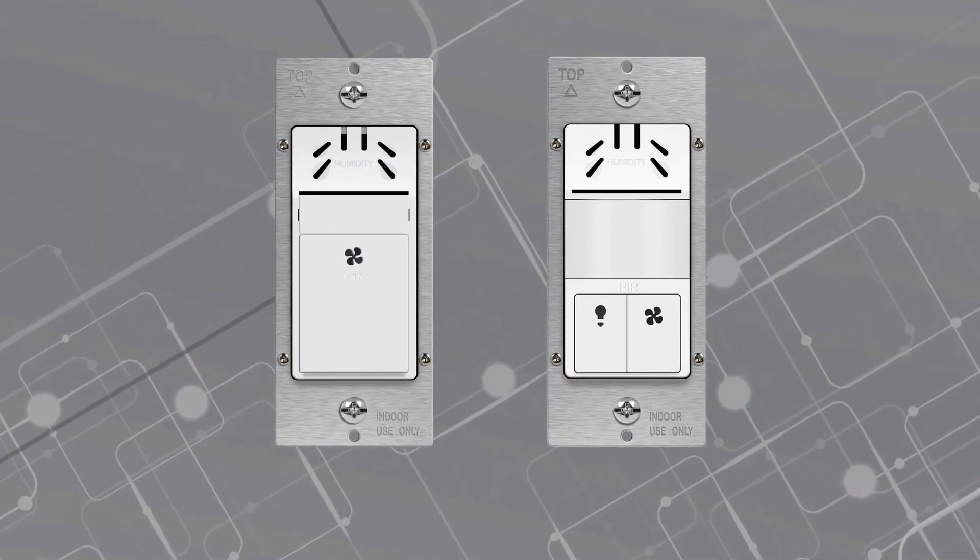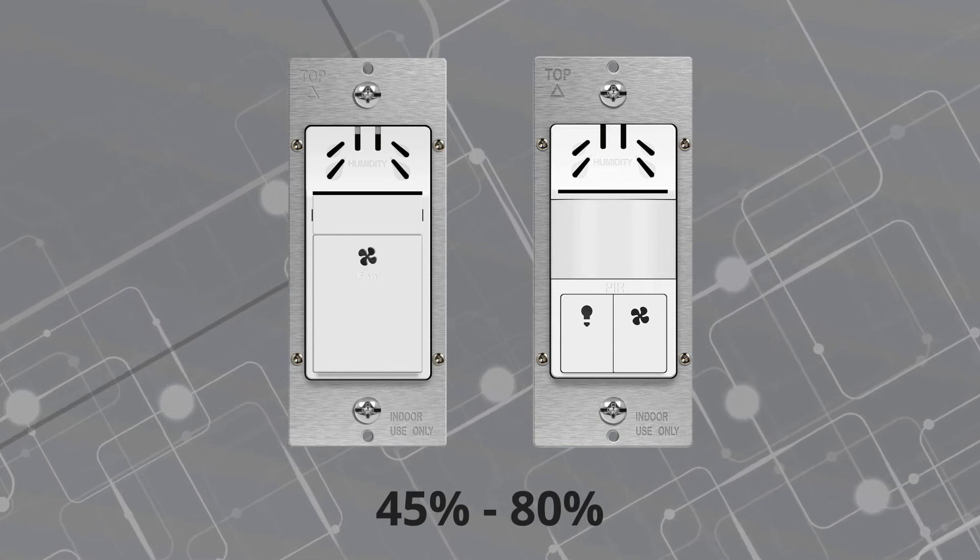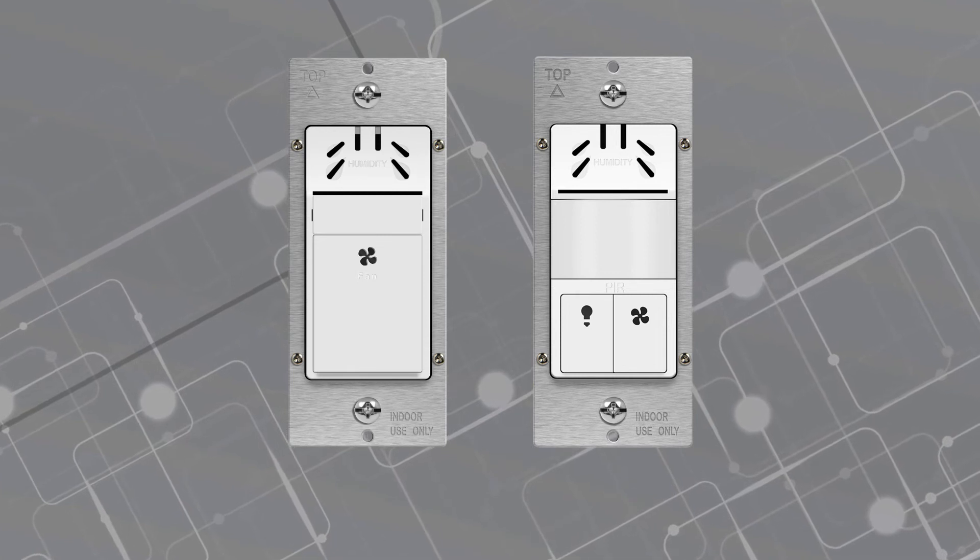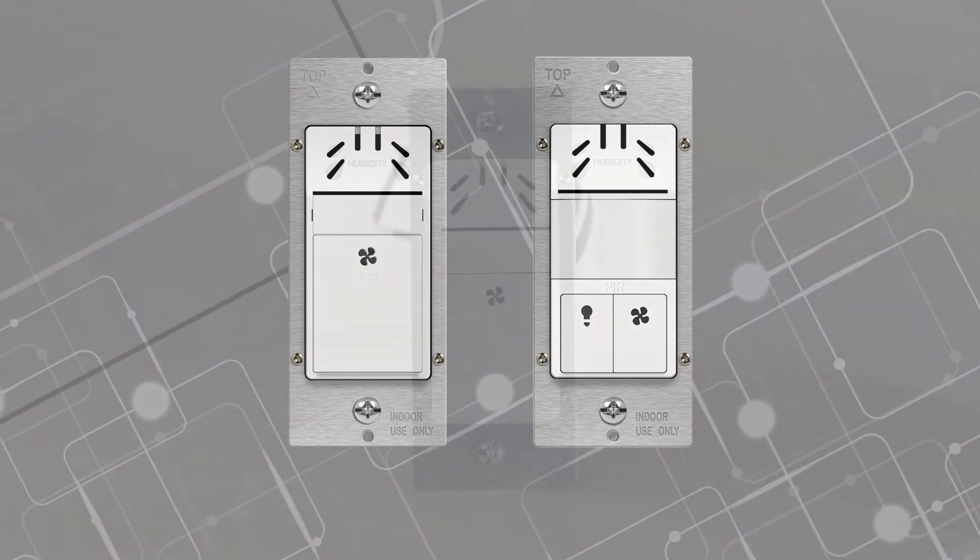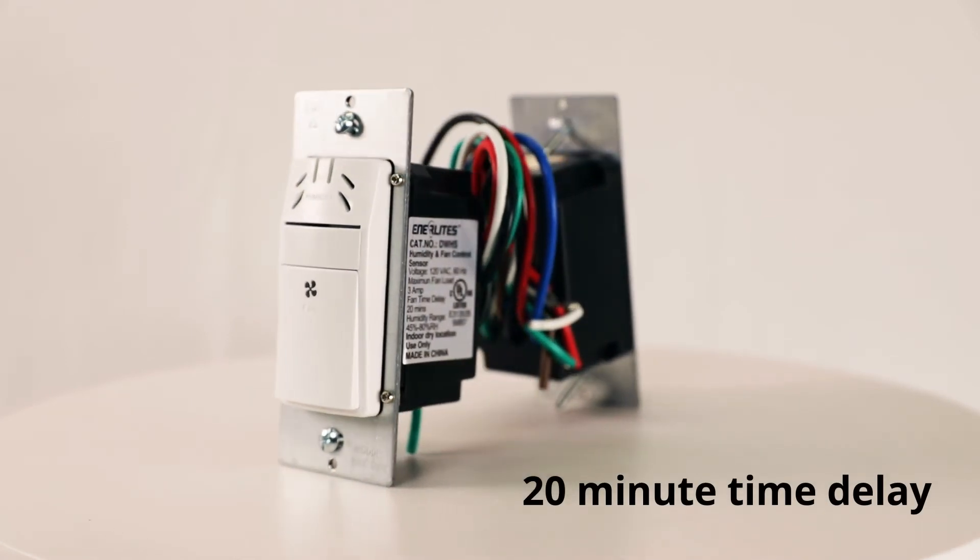These advanced sensors have a humidity range of 45 to 80%. Users can customize humidity detection sensitivity levels on either unit and time delays for light operation on the dual load. The single load humidity sensor comes with a preset time delay of 20 minutes.